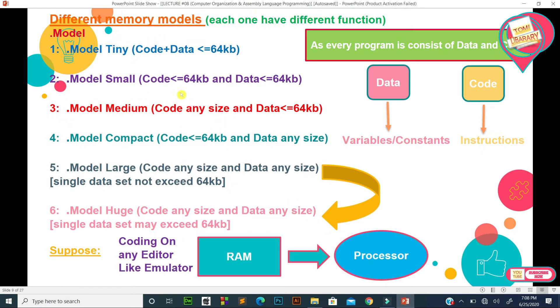There are different memory models: Tiny, Small, Medium, Compact, Large, and Huge - one to six. Each of these models has different functions. If we write Tiny, different space will be reserved in RAM. If Small, different space. If Medium, different space will be reserved in memory. But for data plus code both, it depends on how large the program is.